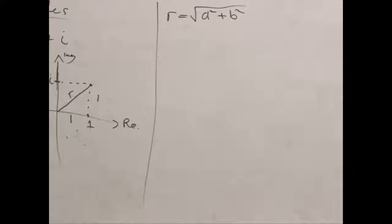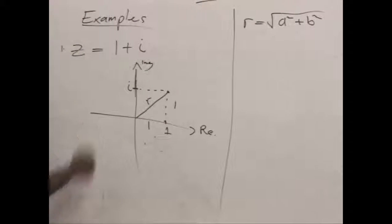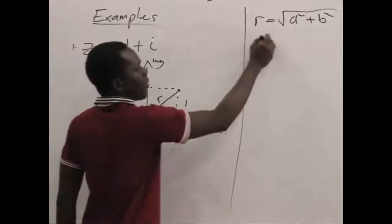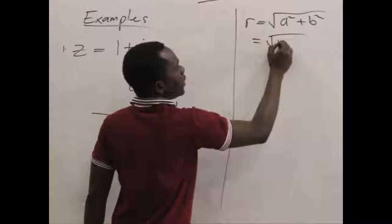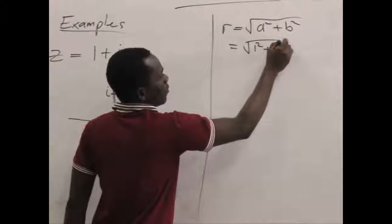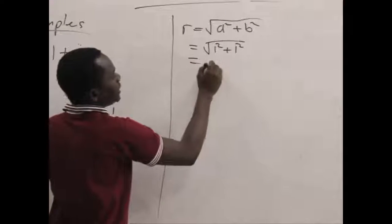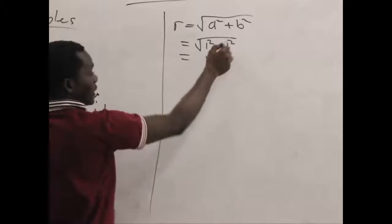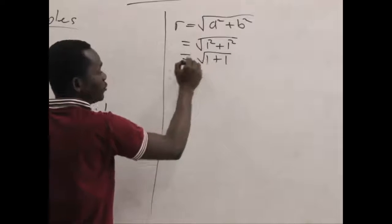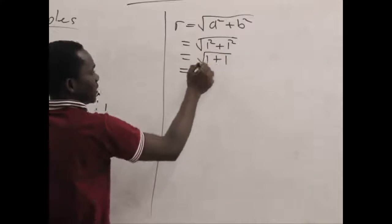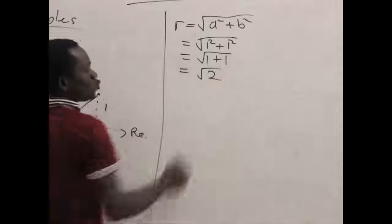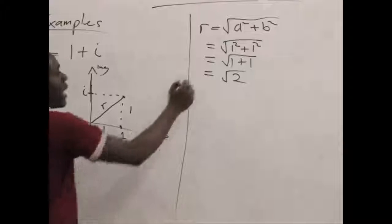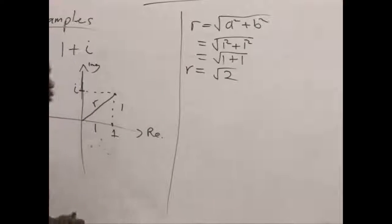And here our A is 1 and our B is also 1, as we can see represented in the diagram. So R becomes the square root of 1 squared plus 1 squared, which is eventually 1 plus 1. And that square root will give us square root of 2 as our final answer. So R has the magnitude of square root of 2.